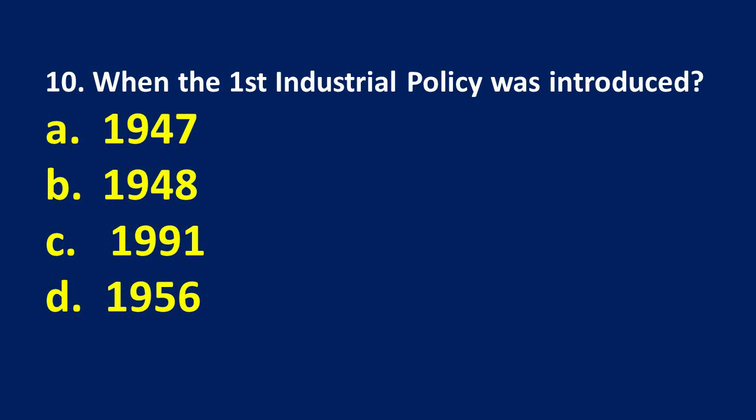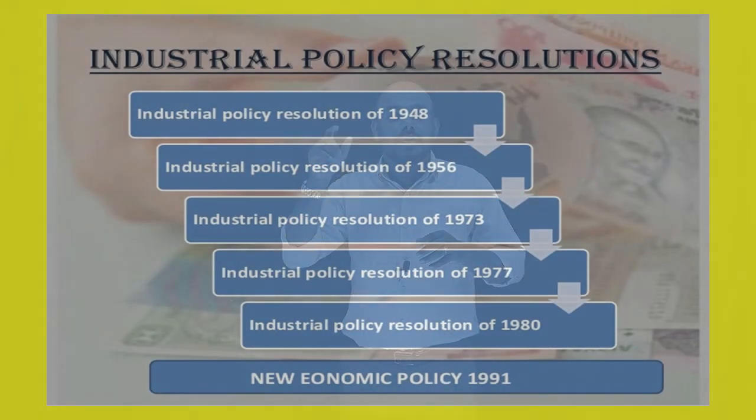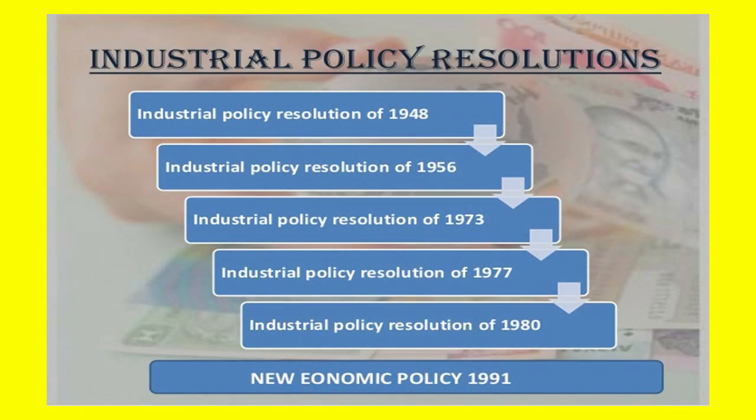The correct option is B — 1948. The Industrial Policy Resolution of 1948 was India's first industrial policy, aimed at rapid industrialization.